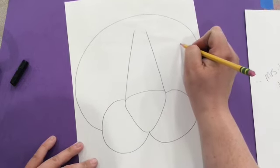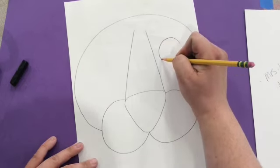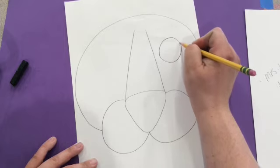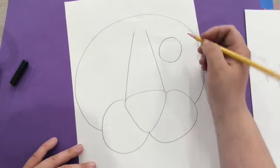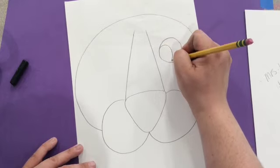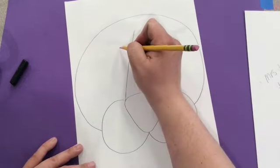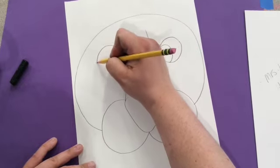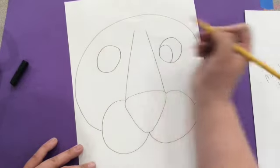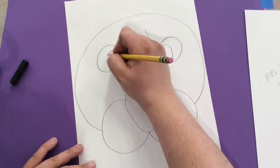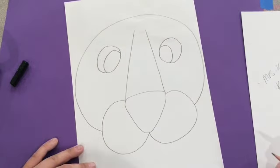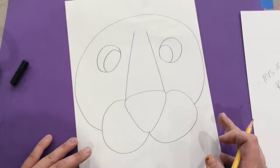Then we are going to do two circles for eyes. You can decide how you would like your pupils to face. You could have them facing inwards for a silly tiger, going in different directions, maybe one up one down, looking over to the side, straight forward, or up. You can pick. So we did two circles and then our pupils.